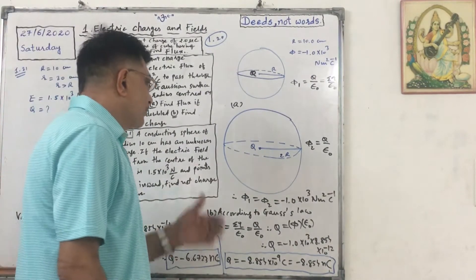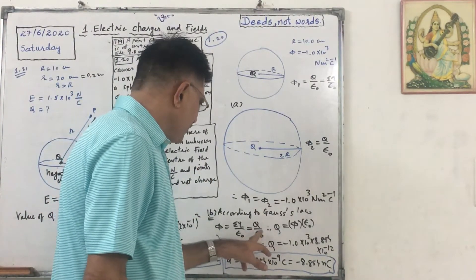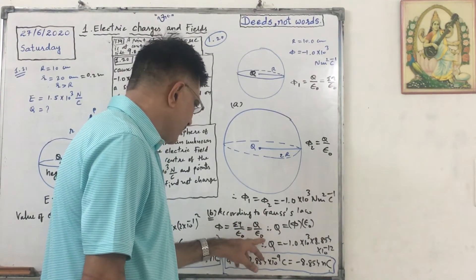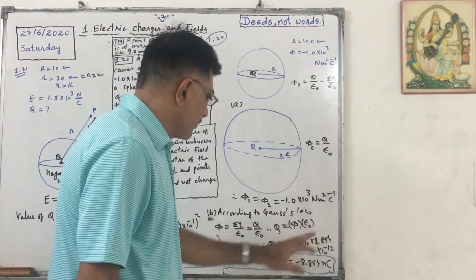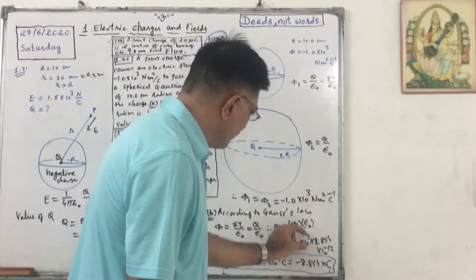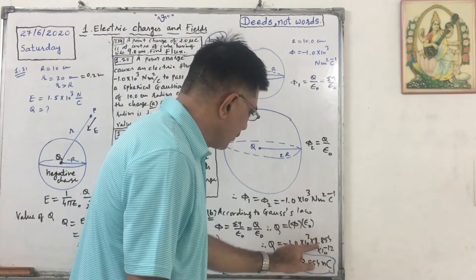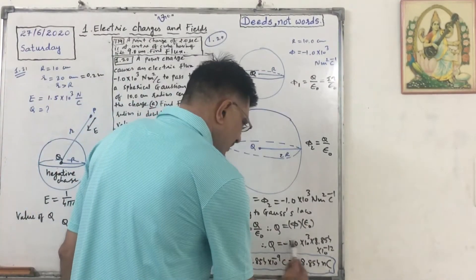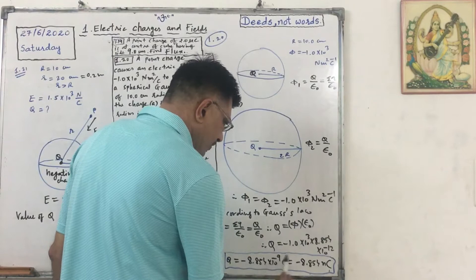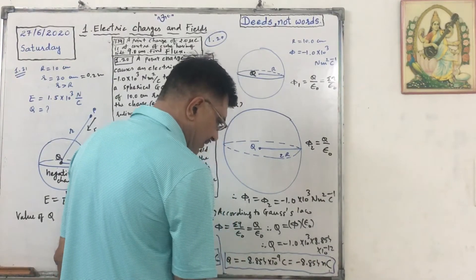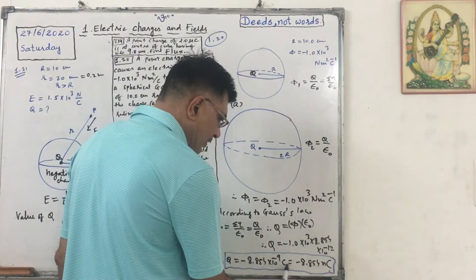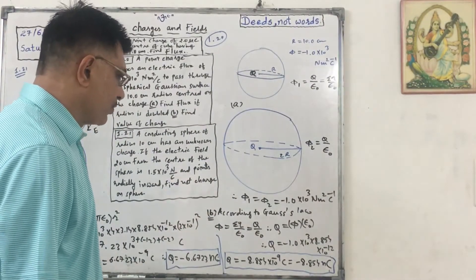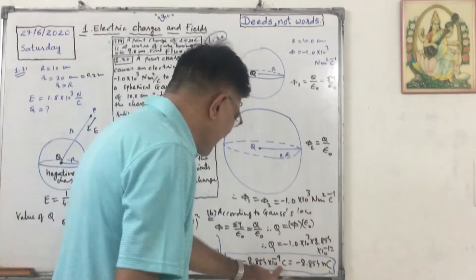Now I have to find out charge. Flux equals q upon epsilon not because sigma q equals q. So q equals flux into epsilon not. Put in the values: minus 1.0 into 10 raised to 3, epsilon not is 8.854 into 10 raised to minus 12. So this becomes minus 8.854 times 10 raised to minus 9 coulomb. The answer is minus 8.854 nano coulomb.